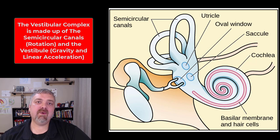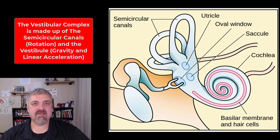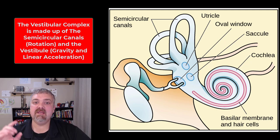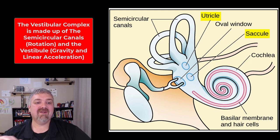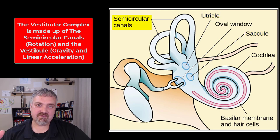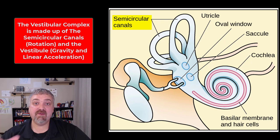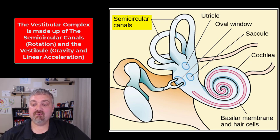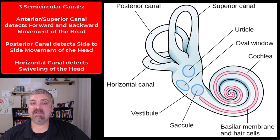Hey everybody, Dr. O here. In this video, we're going to start to talk about equilibrium. Equilibrium sensations are provided by what's called the vestibular complex, which can be broken down into the saccule and utricle in the vestibule — responsible for linear acceleration and the impact of gravity on our body — and the semicircular canals, which respond to rotation or angular rotation. In this video, we're going to focus on the semicircular canals. The next video will cover the saccule and the utricle.